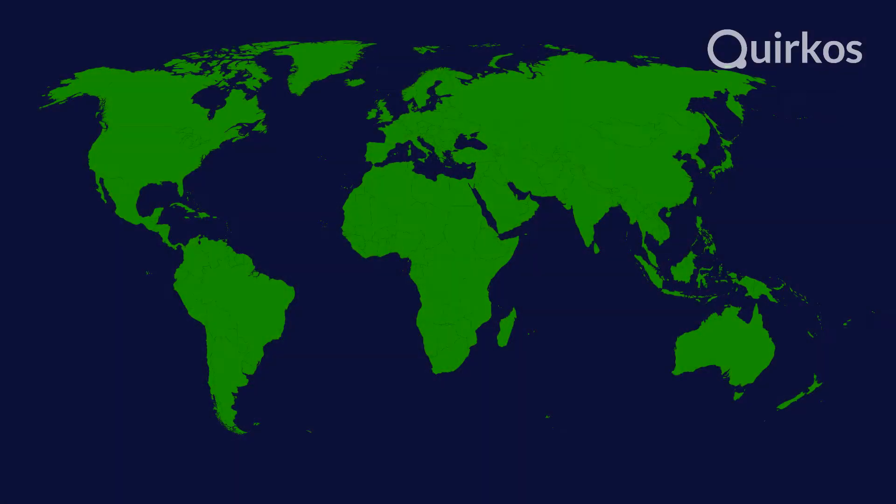Quircos Web is built on the same system that we use for Quircos Cloud, which means wherever you log in, you can access your data. It's securely encrypted, but also stored on a global network of servers, making sure your data stays in a local area according to your data protection requirements.